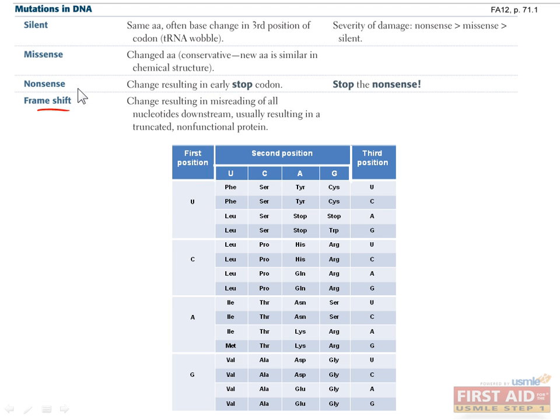A frameshift mutation is unique among all the ones listed here because it's the only one in which nucleotides are added or removed instead of just being changed. Since this throws off the comma-less non-overlapping code that I mentioned a minute ago, everything downstream from the mutation will code for the wrong amino acids.